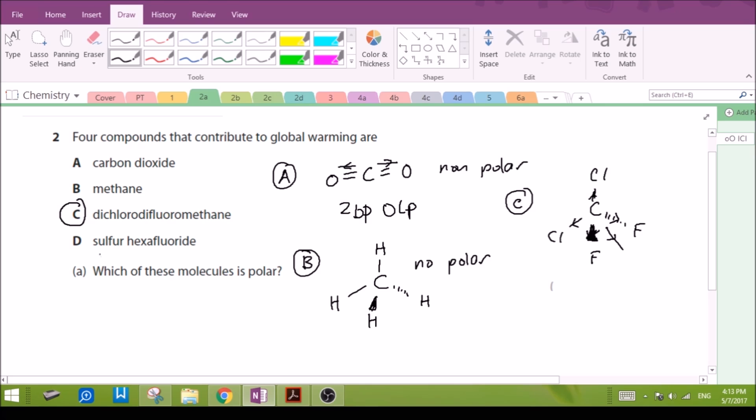Let's check sulfur hexafluoride, SF6. All these bonds are polar between the sulfur and fluorine, but the bonds, the symmetric nature of the molecule, the bonds polarity will cancel each other out, so overall this is non-polar for sulfur hexafluoride. So the only polar molecule here will be C.